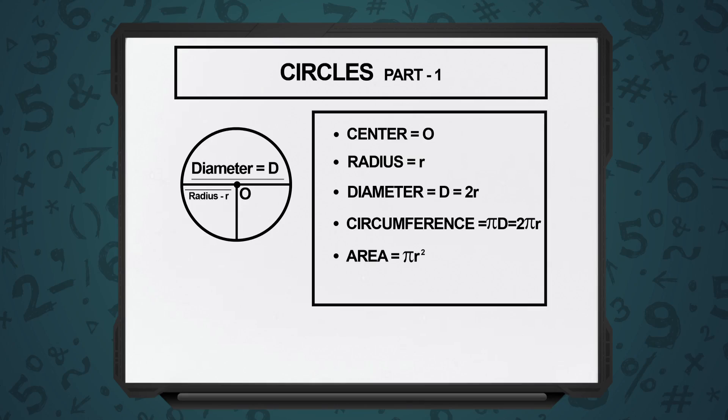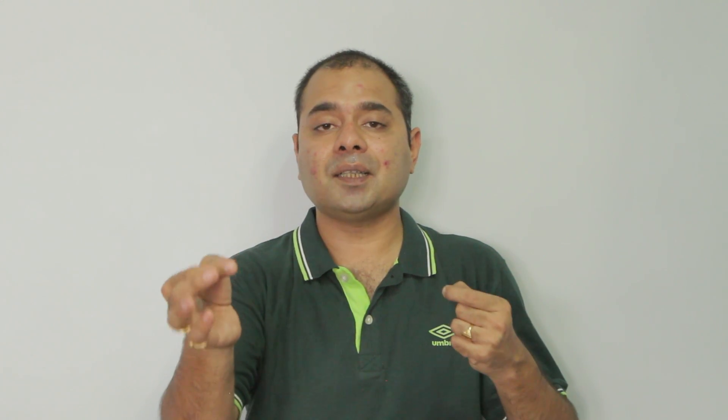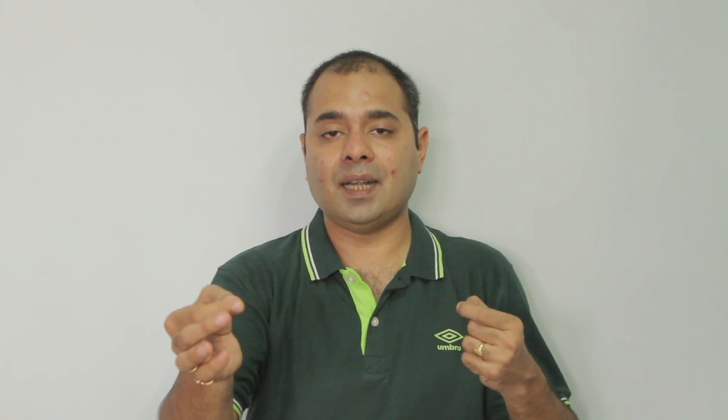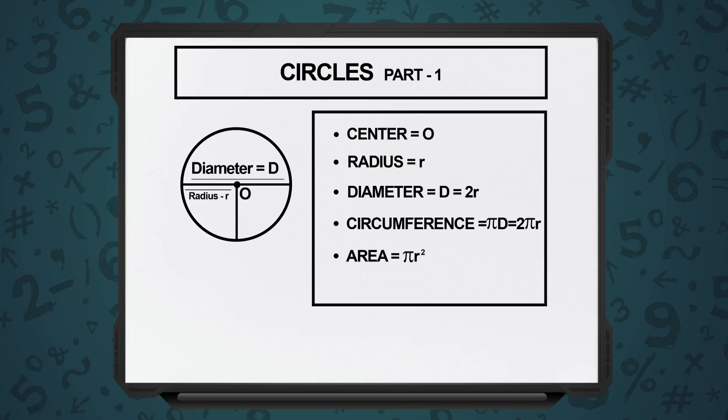The next thing is the diameter. The diameter is a segment that moves from one end of the circle to the other end of the circle passing through the center. The diameter has to pass through the center, and the length will be 2 times that of the radius. So, diameter is equal to twice radius.